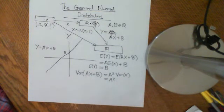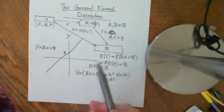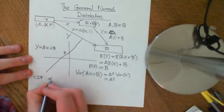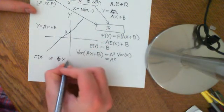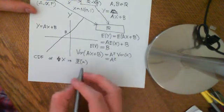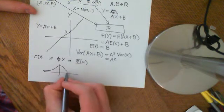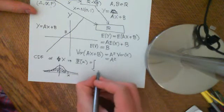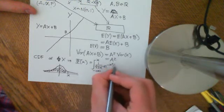The way to find the PDF of this new random variable is firstly to use CDFs, then convert the CDF of X into the CDF of Y, and then get the PDF by differentiating the CDF. The CDF of the random variable X is given by phi of x, which is the area under the standard normal distribution curve — the integral from negative infinity to x of 1 over the square root of 2π times e to the negative x squared over 2 dx.